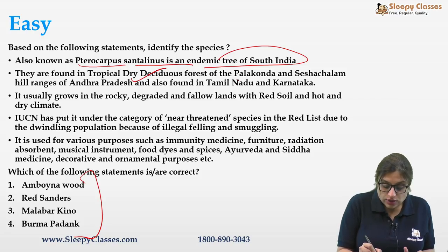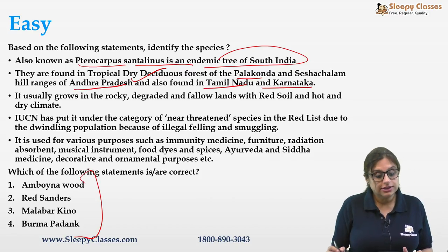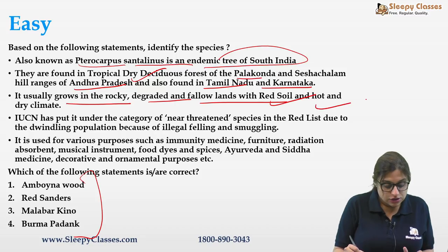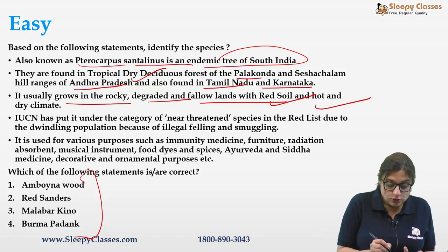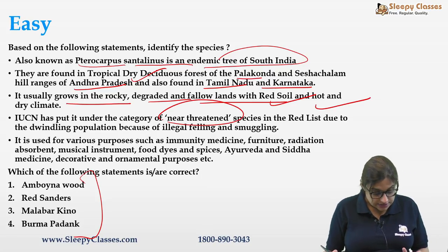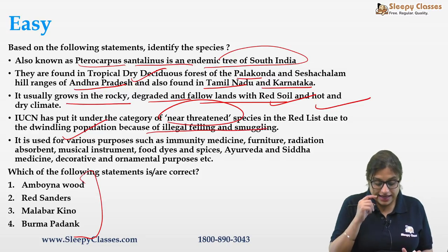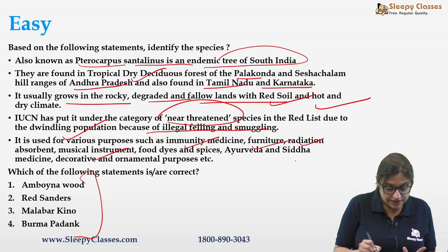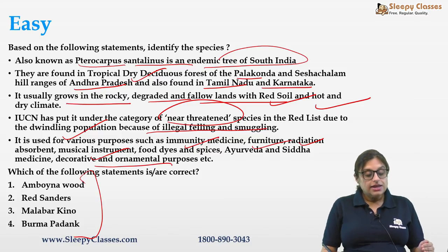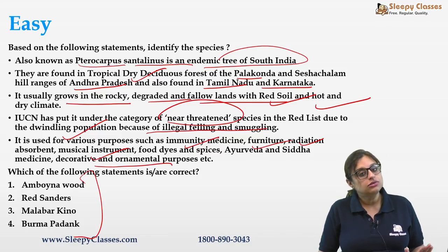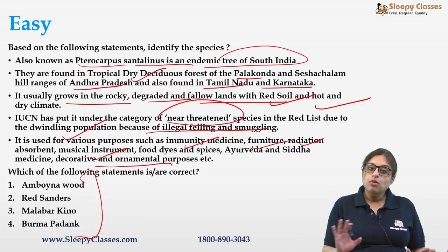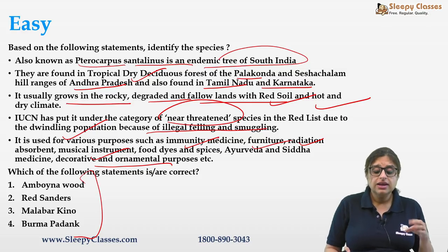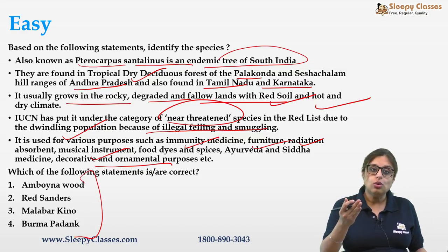Red Sanders grows in rocky, degraded, and fallow lands with red soil and hot, dry climate. IUCN has listed it under near threatened due to illegal felling and smuggling. It is used for immunity, medicine, furniture, radiation-absorbing instruments, food dye, spices, Ayurveda, Siddha medicine, and decorative purposes.